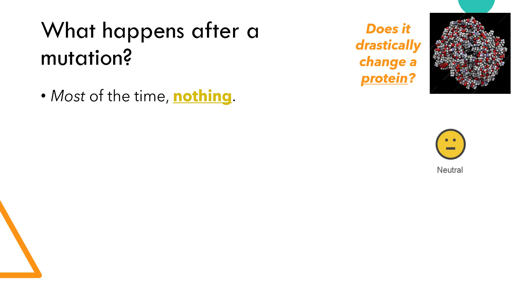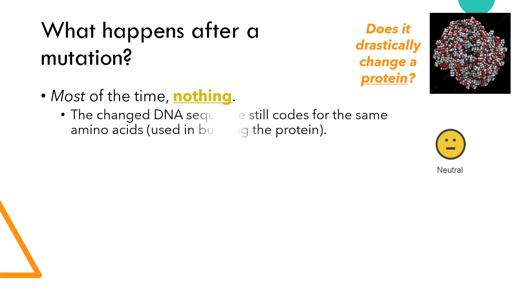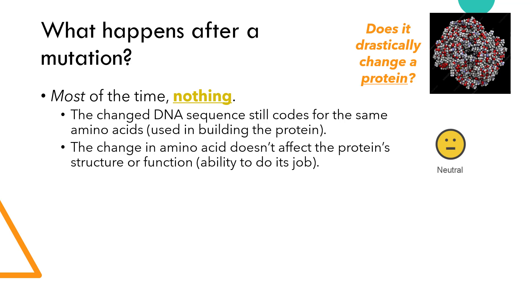There are a few reasons why. One possibility is that the change in the DNA sequence still ends up coding for the same amino acids. Amino acids are what link together to make a protein. So if the amino acids linked together are still the same as what they should be, this results in the same protein, and everything is fine — nothing is different. Another reason why nothing might happen is that an amino acid does end up changing, but that change has little or no effect on the protein's function or ability to do its job. Sometimes the substituted amino acid has similar properties as the original, so the protein functions normally.